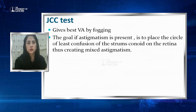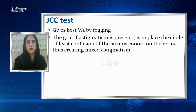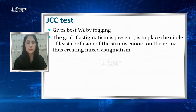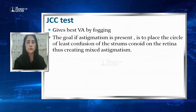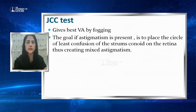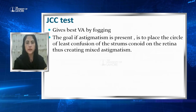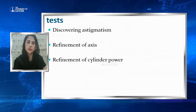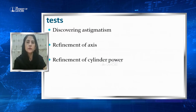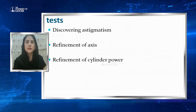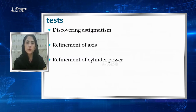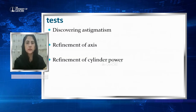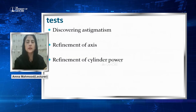How do we conduct the cross cylinder test? First, give the patient best visual acuity by fogging. We will assess three things: first, whether the patient has an accommodation mechanism; second, refinement of the axis; and third, refinement of cylindrical power.